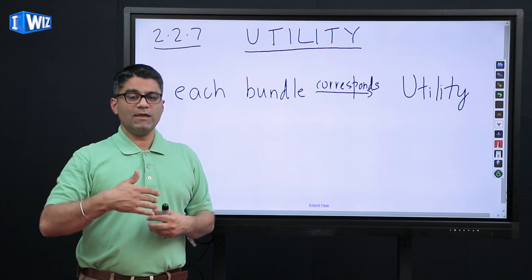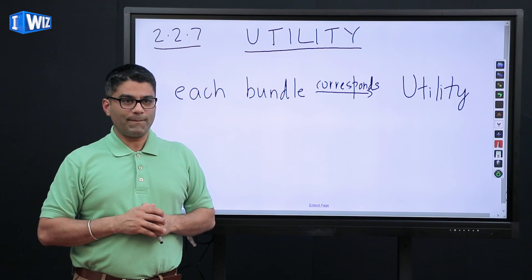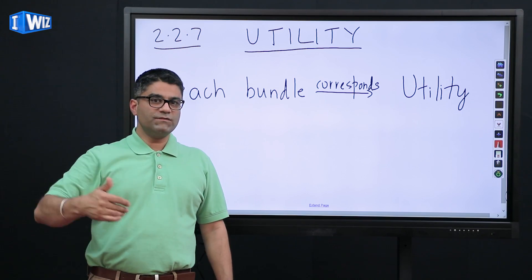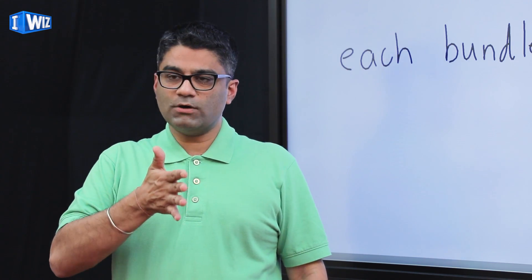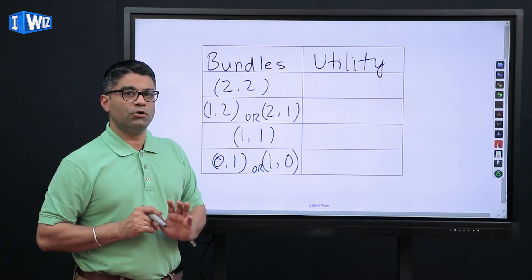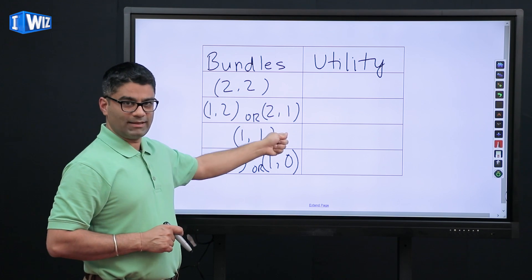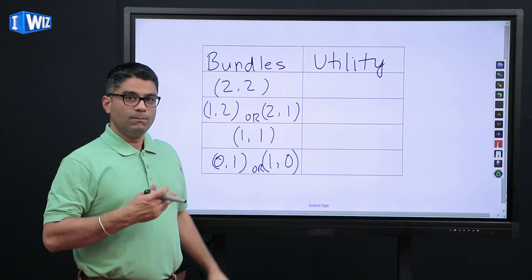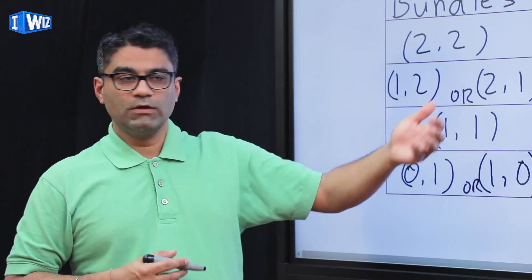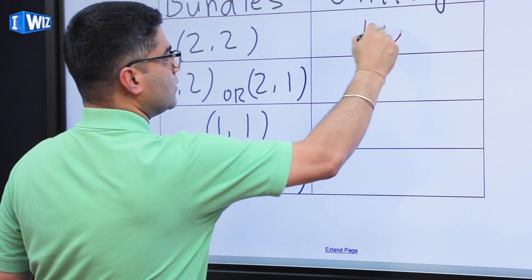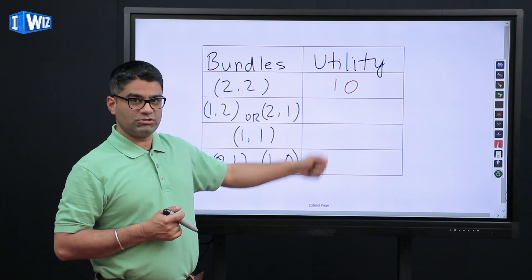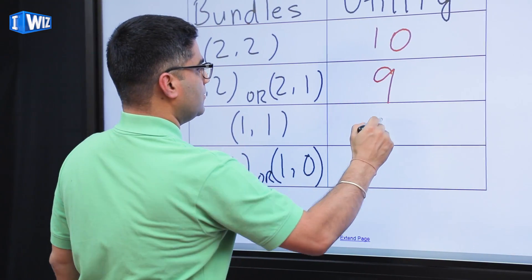The easiest way to think about this is: if consuming a bundle of two goods gives you a level of happiness of 10, whatever that means, that is the utility you get from that bundle. If there's another bundle which gives you more happiness, that's just going to give you a level of utility more than 10. You have learned everything you need to know to tell me which bundle gives you more happiness than another. But until now you could not rank them quantitatively, which is what utility does. So if this gives you a level of utility of 10 — which is happiness, now we have an economic term for it which is utility — the utility for these will be 9, 8, and 7.